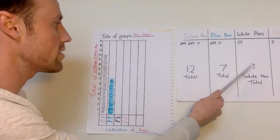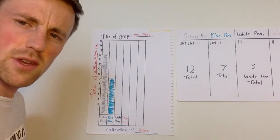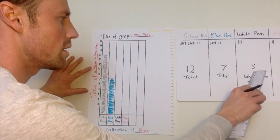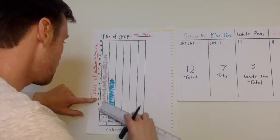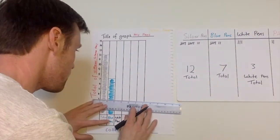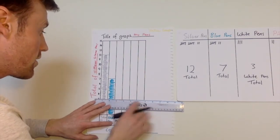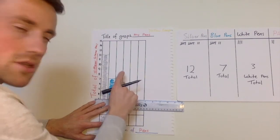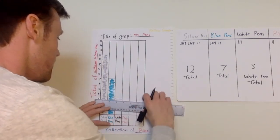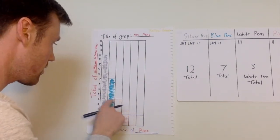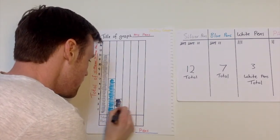Now for white pens — I'm just going to use black because it's very hard to write in white and it wouldn't look nice. Find the total, which was 3. Grab your ruler and rule it across where the 3 is, just slightly above. Remember to go to the next box, because that's where the white pens are. Rule a line across there, then check — going across, it should be in line with the 3.